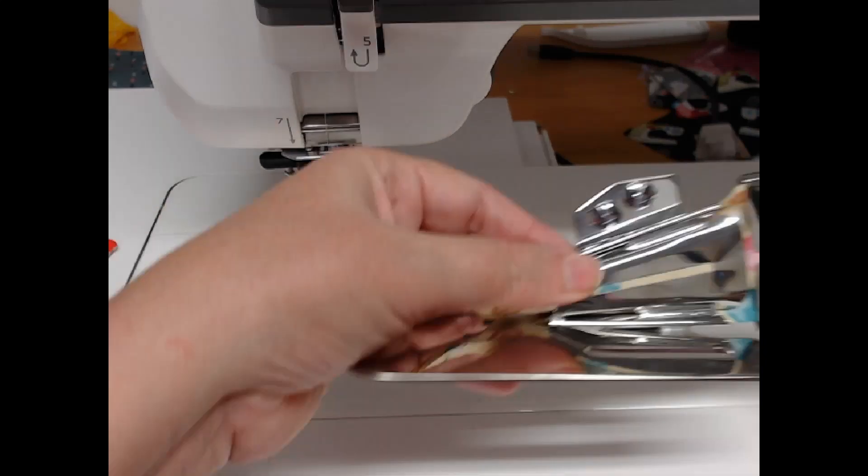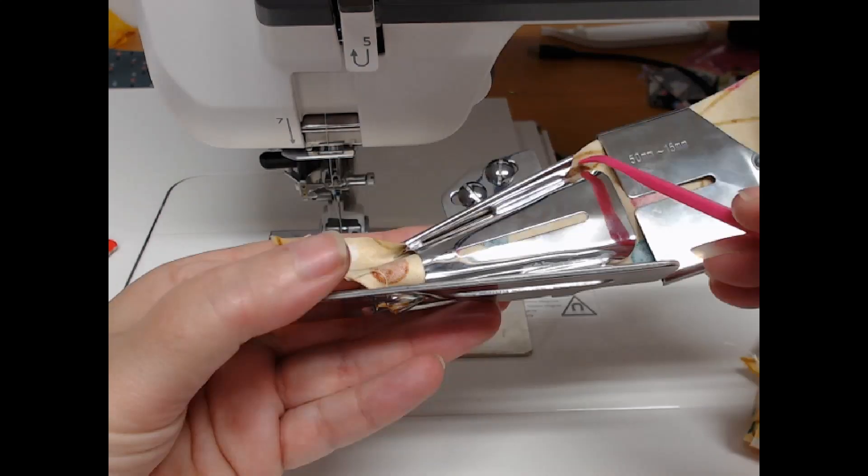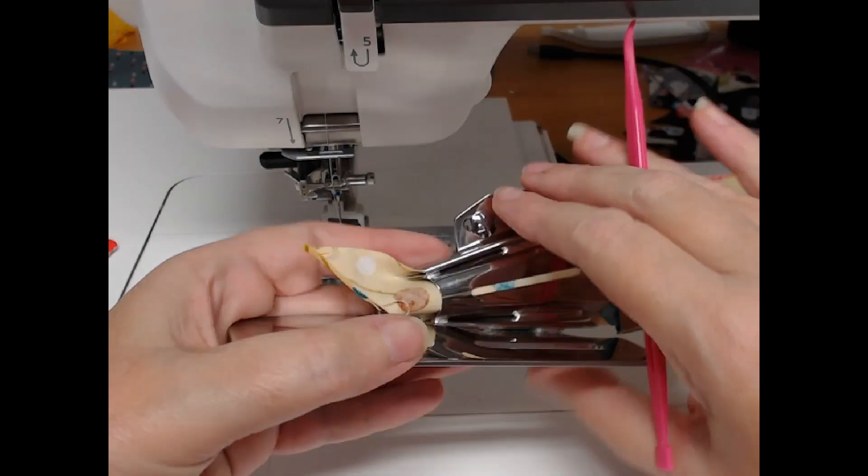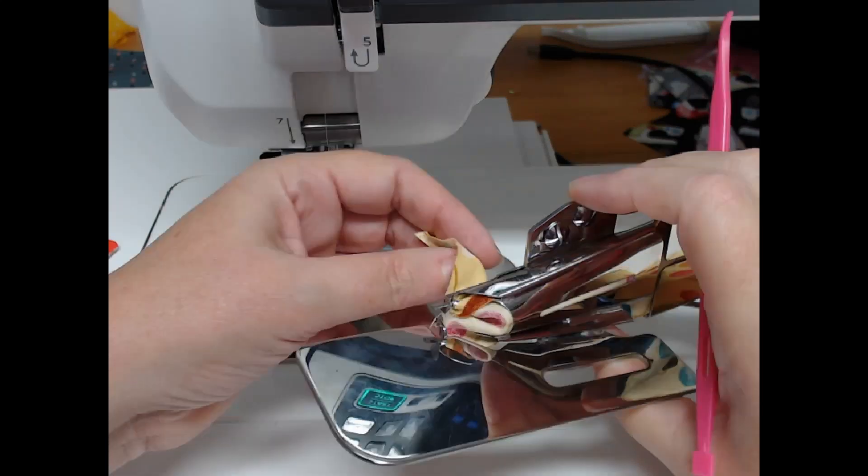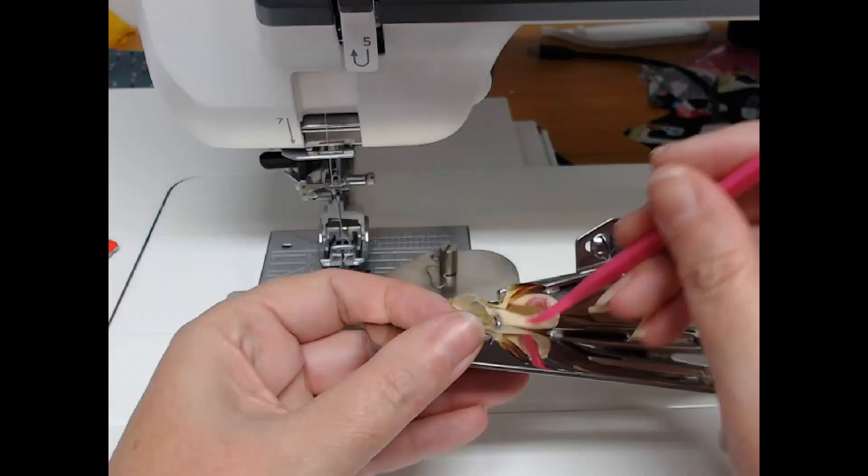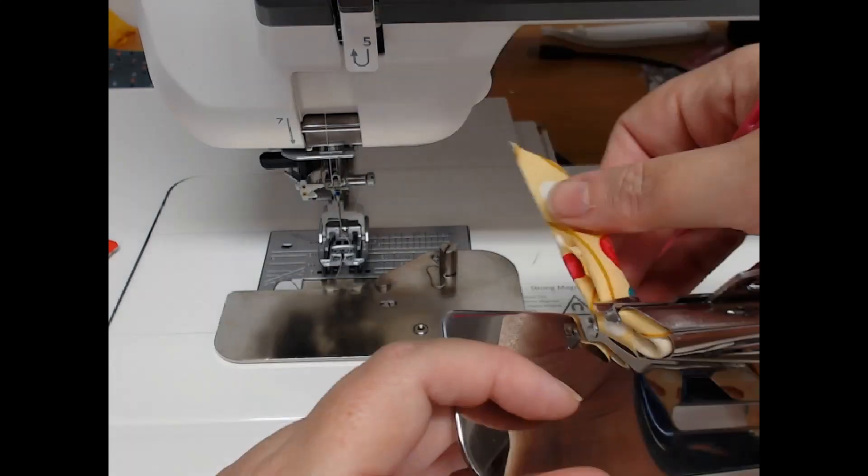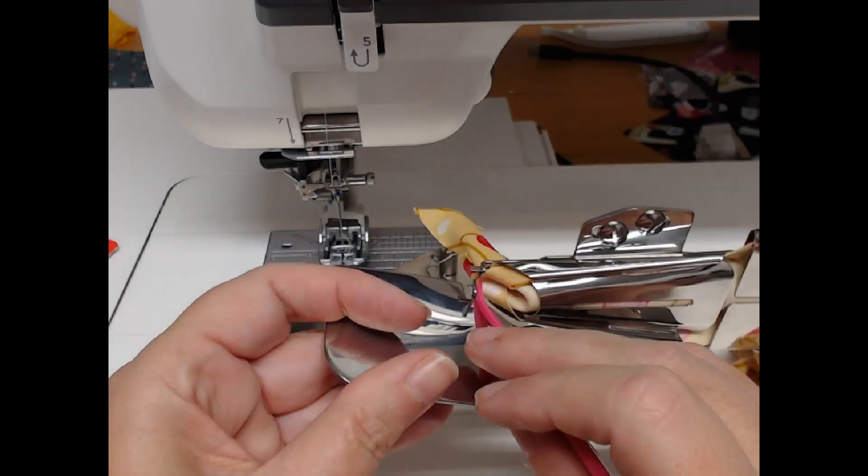And then this second part is where it does all of the work. And what you can see along here is it folds it here and here. And then if I bring my fabric through there, you can see I've got a folded edge there and I've got a folded edge there. And then my fabric goes in the middle there and gives me a beautiful finished seam.